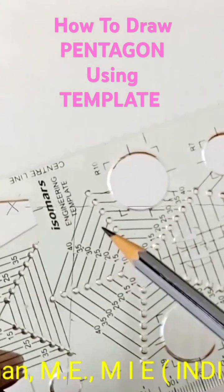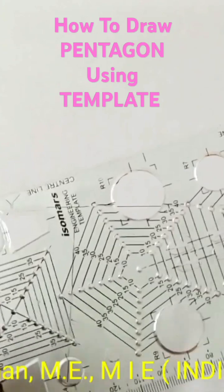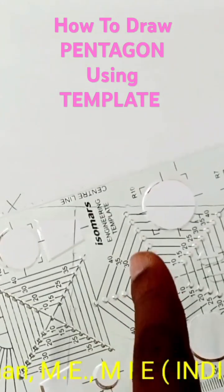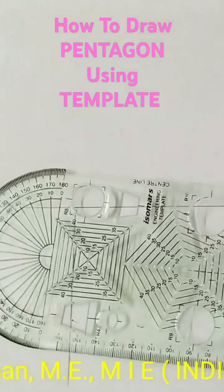Side of your pentagon - consider I choose this as a 30mm side. Okay, turn your template so that the 30mm side and this vertical line coincides. If you keep like this...